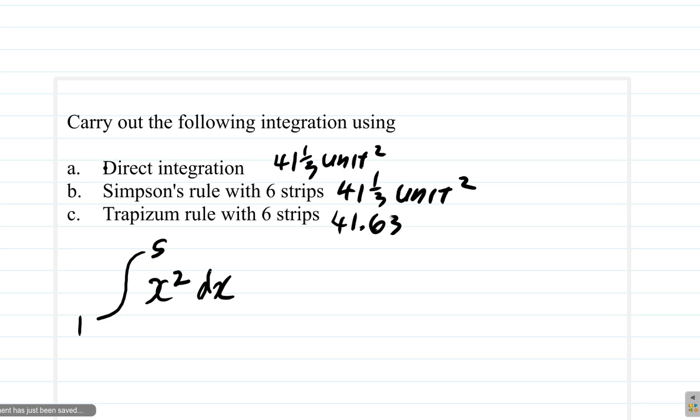The Simpson's rule is more accurate than the trapezium rule, and in some cases the Simpson's rule even gives you the exact value of direct integration.